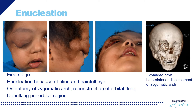This child presented with a blind eye which was very painful, and this was the indication to perform enucleation. In the same surgery we performed an osteotomy of the zygomatic arch, which was displaced laterally and downward, and reconstructed the orbital floor to elevate the orbit — hopefully allowing an eye prosthesis to be worn in time. In that same first stage we also performed debulking of the periorbital area including the eyelid.